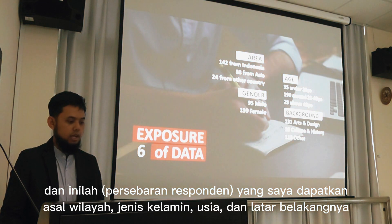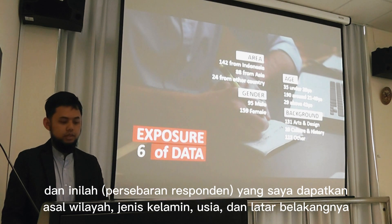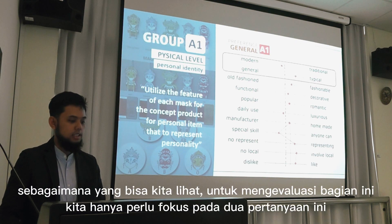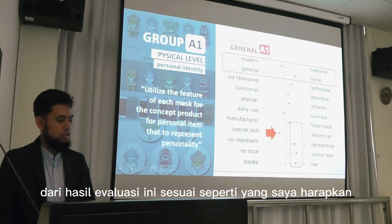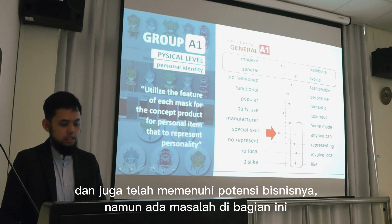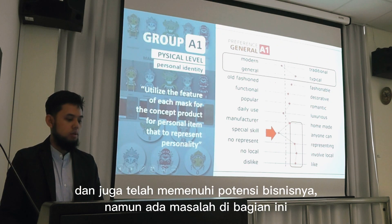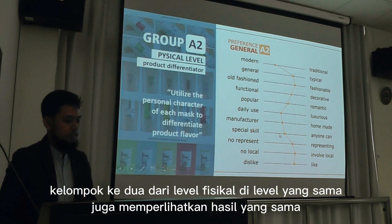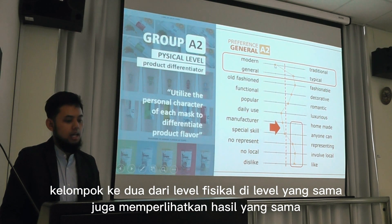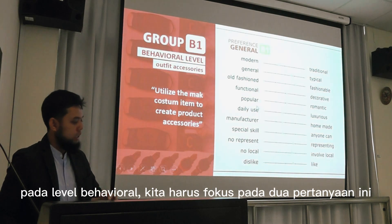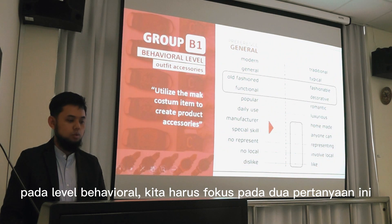This is what I got from the area. There are respondents of different gender, different age, and different background. This is the result from the first group, product A. As you can see at the first physical level, we focus on these two questions. I can say that it already fulfills my expectation because group A1 is already modern and typical. It also fulfills the business potential, but there is a problem: all respondents say that it requires special skill. The second physical group shows the same issue.